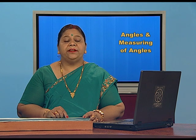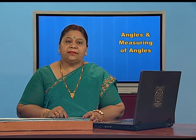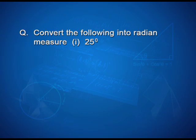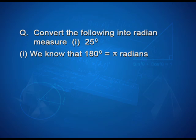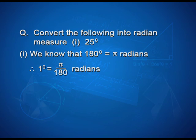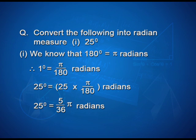Having studied the relation between degree and radian, let us solve some examples. Convert 25° into radian measure. We know that 180° = π radians, therefore 1° = π/180 radians. So 25° = 25 × π/180 radians, which simplifies to 5π/36 radians.